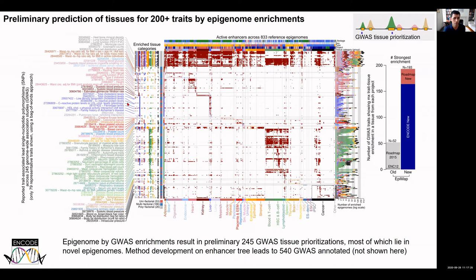We then used this regulatory circuitry — enhancer annotations and motif annotations — to prioritize genetic variants across hundreds of traits. Showing 250 different traits, the enrichment for individual enhancers and individual tissues is quite cell type-specific for the vast majority, which we call unifactorial traits. For a subset of polyfactorial and multifactorial traits, the enrichments span many different tissues. The number of enriched tissues has increased dramatically from previous annotations to more than 200, and more than 500 using a tree-based approach.